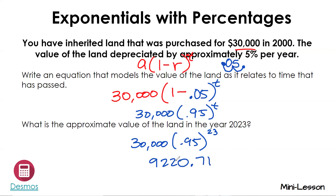I got $9,220.71. Round to two decimal places because we're dealing with money. Does everybody know how to round? When the next number is greater than five, round up; if it's less than five, round down.